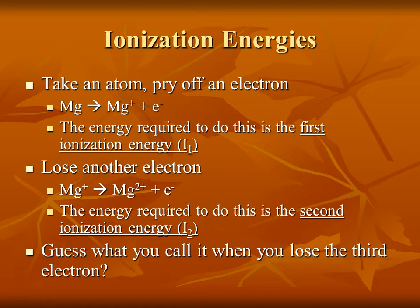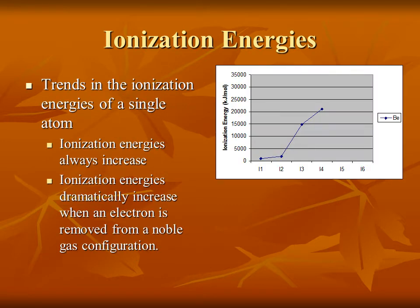When you lose the third electron, that's the third ionization energy. There are lots of periodic trends in ionization energies. If you look at the trends for a single atom, the ionization energies always increase — the second is always higher than the first, the third always higher than the second, and so on. But the ionization energies dramatically increase when an electron is removed from a noble gas configuration.